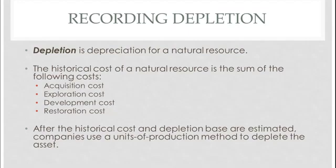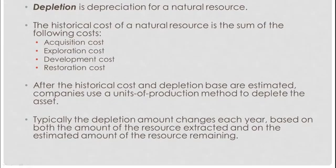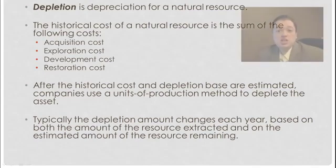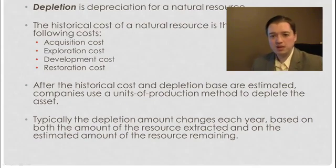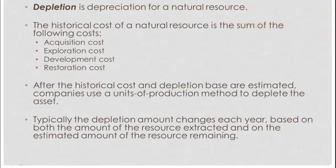Now the last difference between depreciation and depletion is the fact that I have no idea in most cases how much I'm really going to get out of this natural resource. I don't know exactly how much ore is in a mine, or how much oil is in a well, or exactly how much timber I'm going to be able to get out of a forest successfully. So I'm just guessing, which means my numbers are going to change every year. Changes in estimates happen all the time — it just means this happens every year. So it makes this a little more challenging than typical units of production because I'm having to make adjustments on a regular basis.